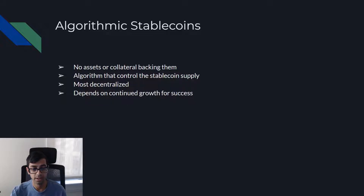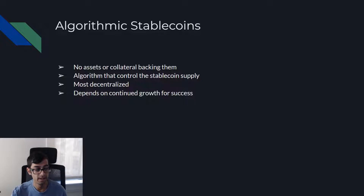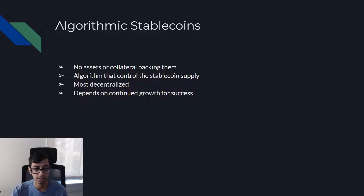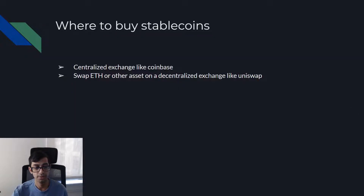Finally, algorithmic stablecoins have no assets or collateral backing them. There's an algorithm that controls the stablecoin supply — they're the most decentralized and they depend on continued growth for success. Check out my video on Luna and UST if you want to learn more about algorithmic stablecoins, as UST is definitely the largest one currently.